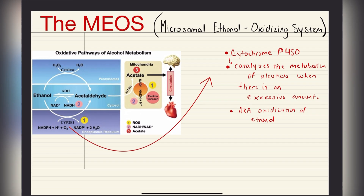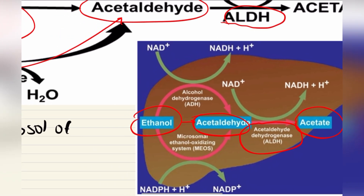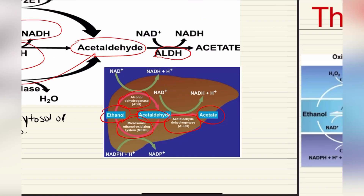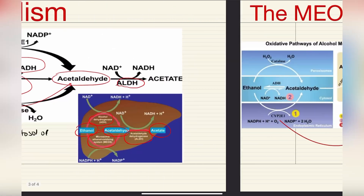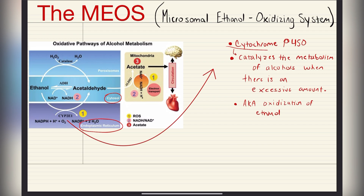Now, if we jump to the MEOS — the Microsomal Ethanol Oxidizing System — going back to the last slide, we have our alcohol dehydrogenase and also the Microsomal Ethanol Oxidizing System, or MEOS. This also breaks down ethanol into acetaldehyde, but the difference with the MEOS is that it happens when there is a large amount of ethanol. The whole alcohol dehydrogenase metabolism is usually done in the cytosol, but in other instances it can happen in the endoplasmic reticulum of the cell, where we have an enzyme called cytochrome P450 — part of a cytochrome family — that will catalyze the metabolism of alcohols when there is an excessive amount of ethanol going through the liver.